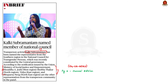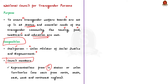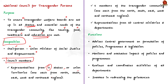The National Council for Transgender Persons (NCTP) is created to mainstream the transgender community's concerns, focusing on livelihood issues as well as raising awareness about the trans community. Its main purpose is to ensure that transgender welfare boards are set up in all states, and that essential needs like housing, food, healthcare, and education are being met. The council is chaired by the Union Minister for Social Justice and Empowerment. It includes representation from five states or union territories — one each from north, south, east, west, and northeast — on a rotational basis. It also includes five members of the transgender community, one each from the same five regions, and representatives from 10 central ministries and departments. The tenure of community members is three years.